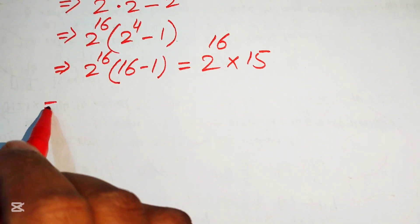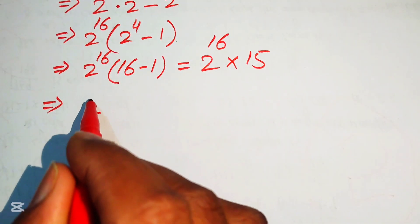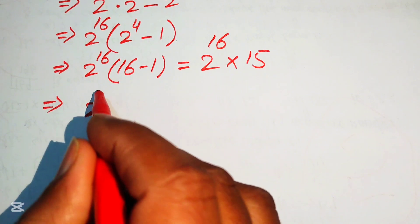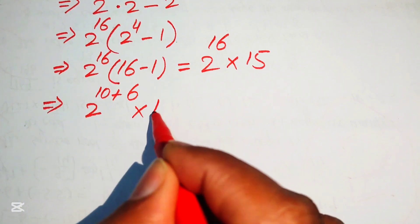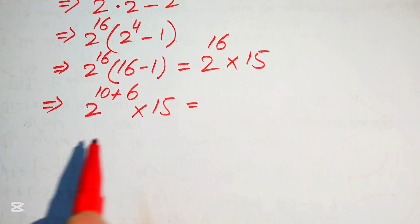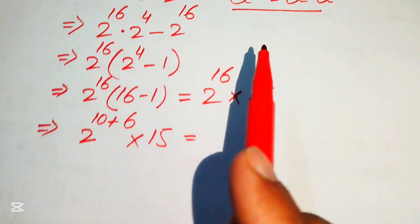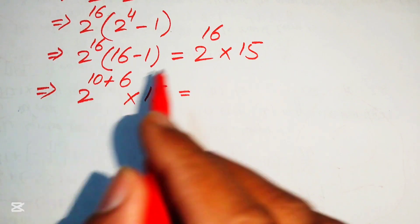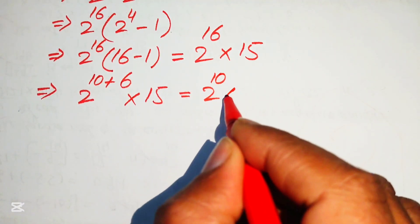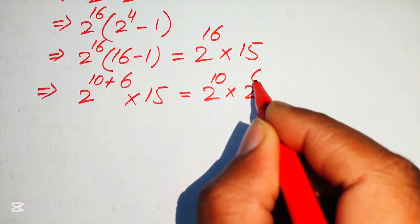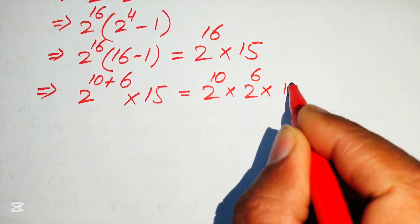Now we focus on the exponent 16 and write it as 10 plus 6, multiplied by 15. Using the exponent law again, this breaks into 2 to the power of 10 multiplied by 2 to the power of 6, all multiplied by 15.